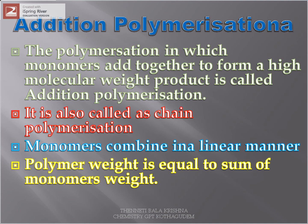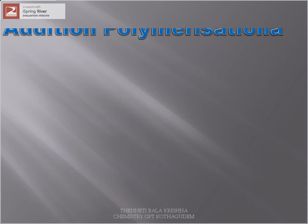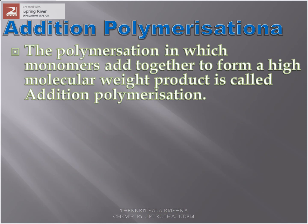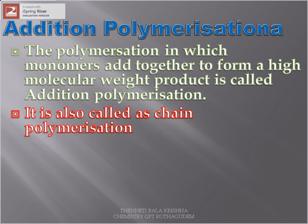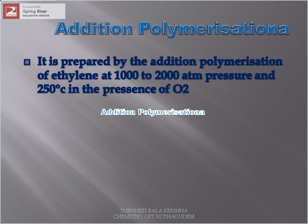The polymer weight is equal to the sum of the monomers' weight — however many monomers participate in the polymerization reaction, the weight of the monomers equals the polymer weight. There is no formation of byproduct, so there is no need to eliminate any byproduct.